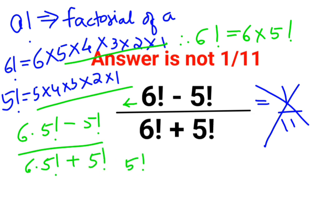Take 5 factorial common from the numerator, leaving 6 minus 1. Similarly, take 5 factorial common from the denominator, leaving 6 plus 1. The factorials cancel, and 6 minus 1 is 4 and 6 plus 1 is 7.